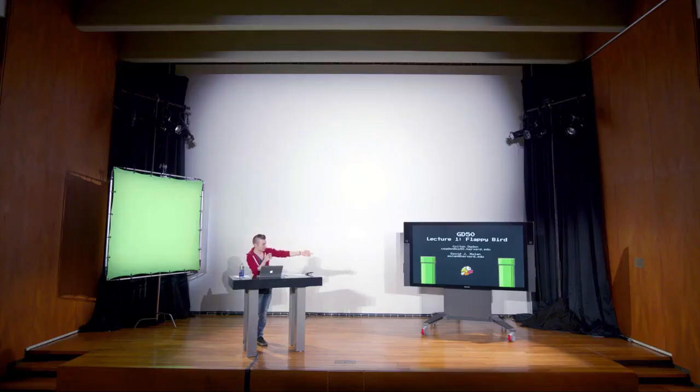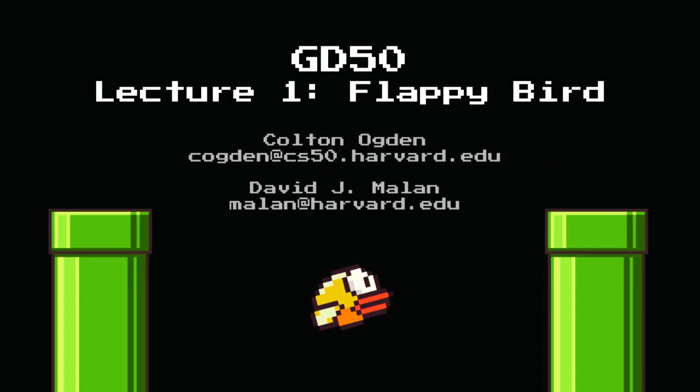My name is Colton Ogden. This is GD50 lecture one, and today we'll be covering Flappy Bird. Last week we covered Pong, which was just basic shapes and colors. Today we'll actually be diving into sprites — we've got some pipes and a bird — and we'll be covering a few other concepts such as gravity and more.